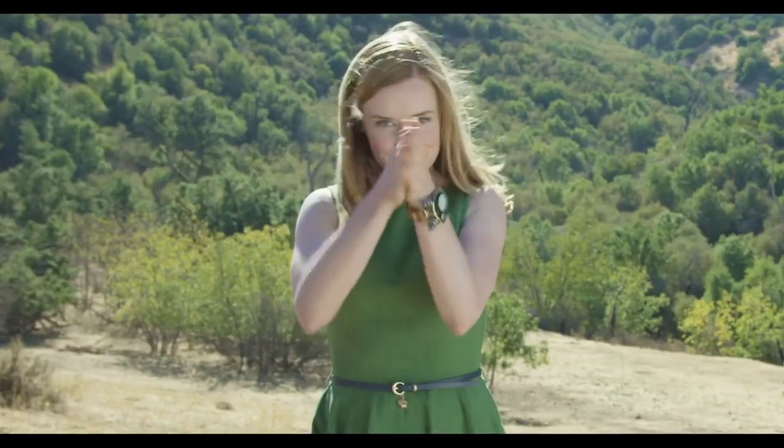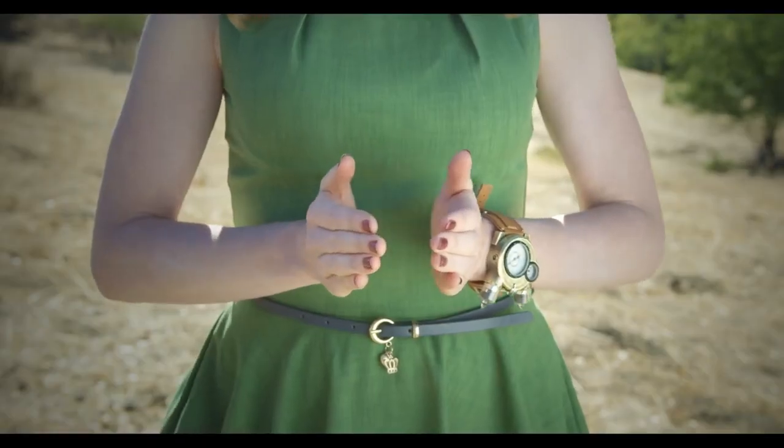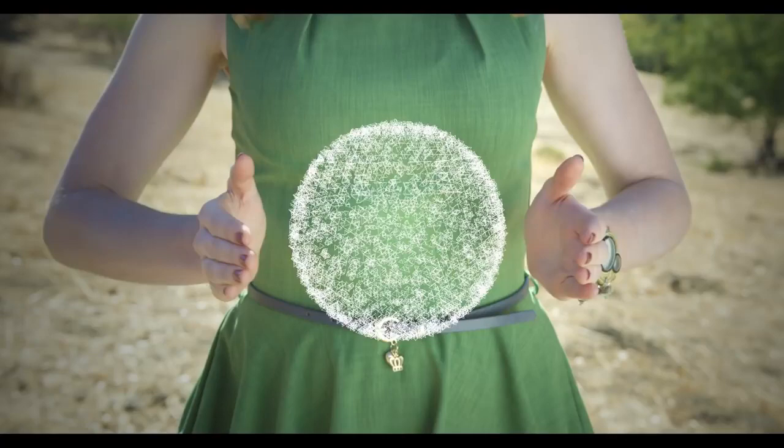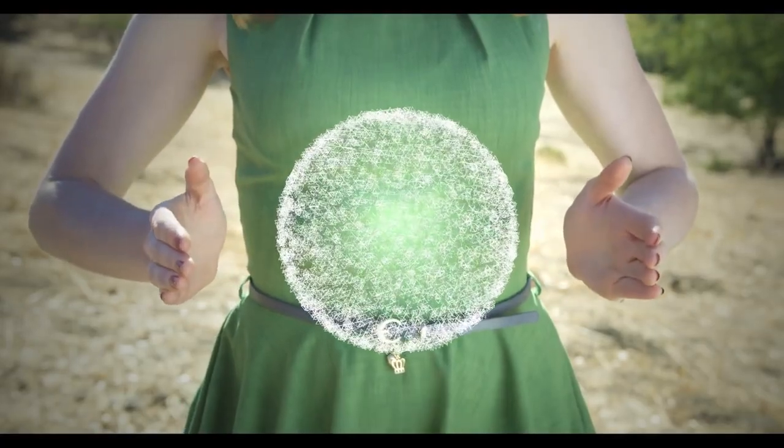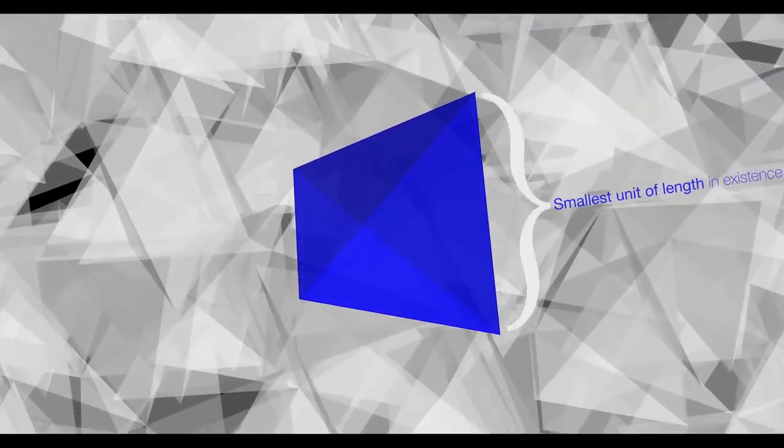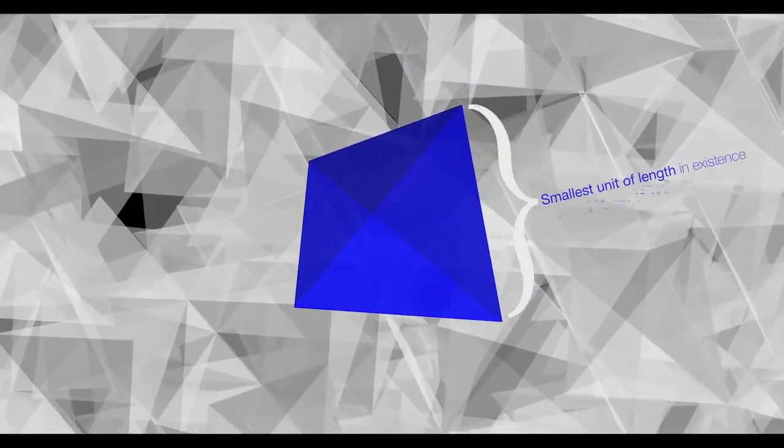And from this 4D quasi-crystal, they derive a 3D quasi-crystal, which they believe is the fundamental substructure of all of reality. This 3D quasi-crystal has a fundamental building block — a tetrahedron — which is a three-dimensional equilateral triangle.